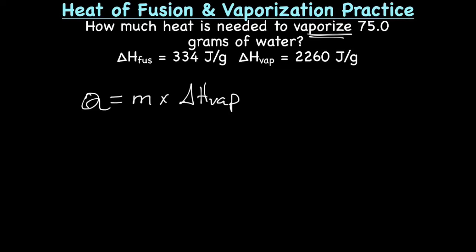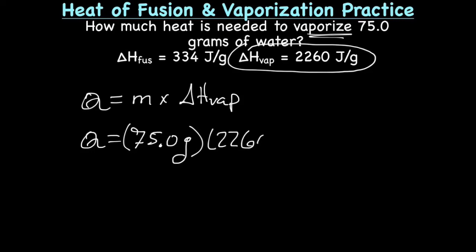Now we just plug this in. Q is the amount of heat. We have 75.0 grams, and we're going to multiply that by the constant for water for heat of vaporization, which is 2,260 joules per gram. So grams will cancel out, and when we multiply, I got 169,500 joules. We've got to look at sig figs.